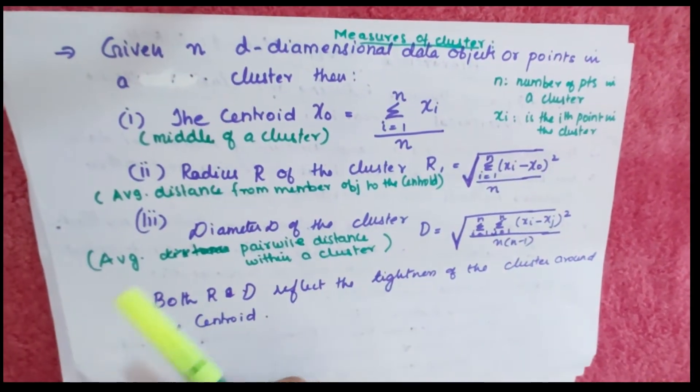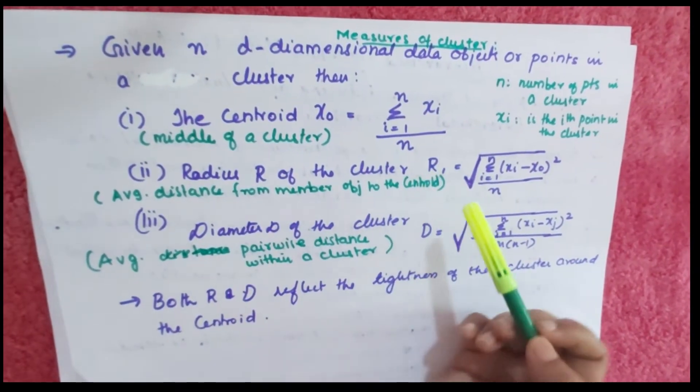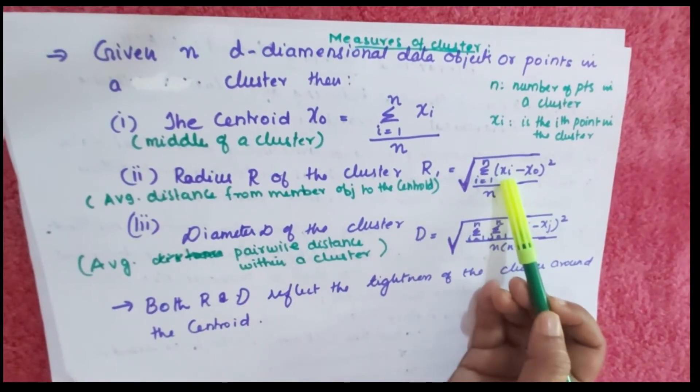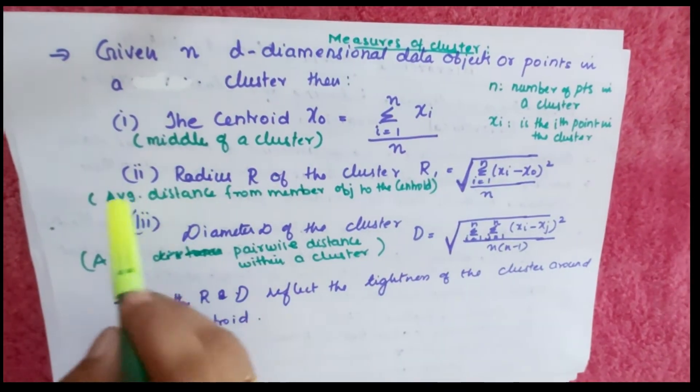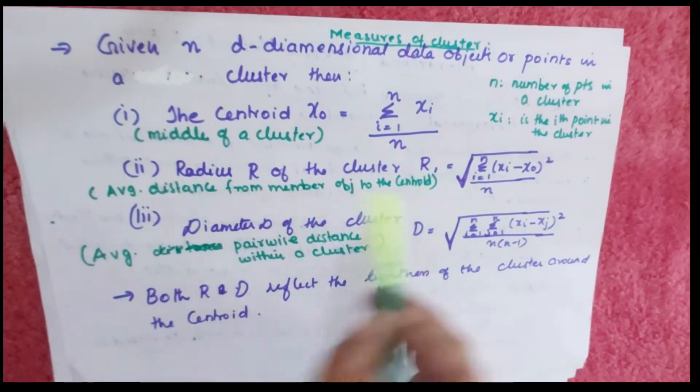The next measurement is the radius of the cluster, represented by R = √(Σ(xi - x0)²/n), where i ranges from 1 to n. Radius is the average distance from member objects to the centroid.